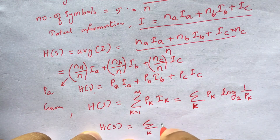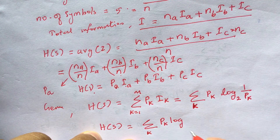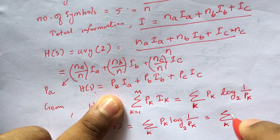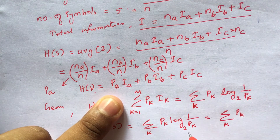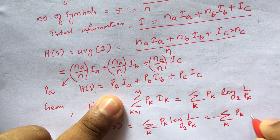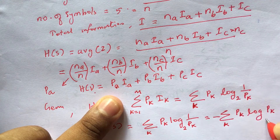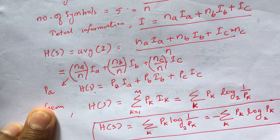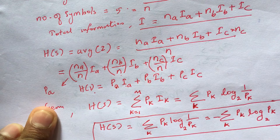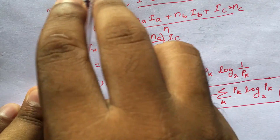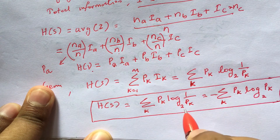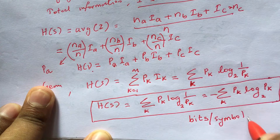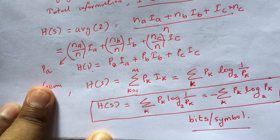So we can write H(S) = Sigma K equal to 1 to M of PK·log(1/PK) to base 2, which is also equal to Sigma K equal to 1 to M of PK times minus log PK to base 2, or equivalently minus Sigma PK·log PK base 2. The unit of entropy is bits per symbol, since we are using log base 2.